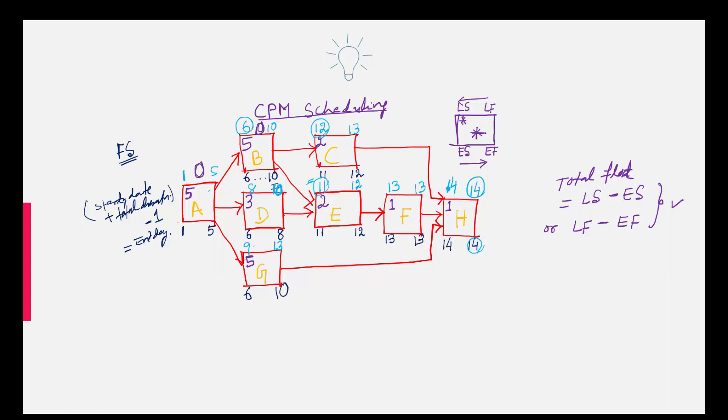What about this activity? So 8 minus 6 or 10 minus 8 both is going to give 2. Here what is happening? 12 minus 11 or 13 minus 12 both are giving 1. So this is basically your total float.